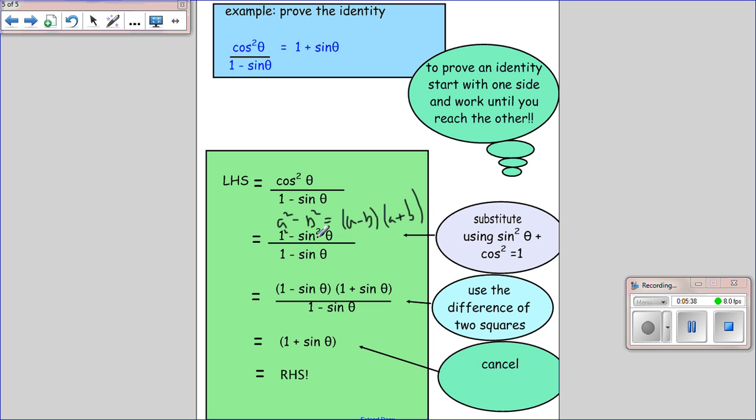So our a is 1, our b is sine theta. So we've got 1 minus sine theta, 1 plus sine theta. And the reason we want to do that is so hopefully you can see now we can cancel here, leaving us 1 plus sine theta, which is the right-hand side. And it's exactly what we wanted. So we're very happy with that. OK, I hope that's helpful.